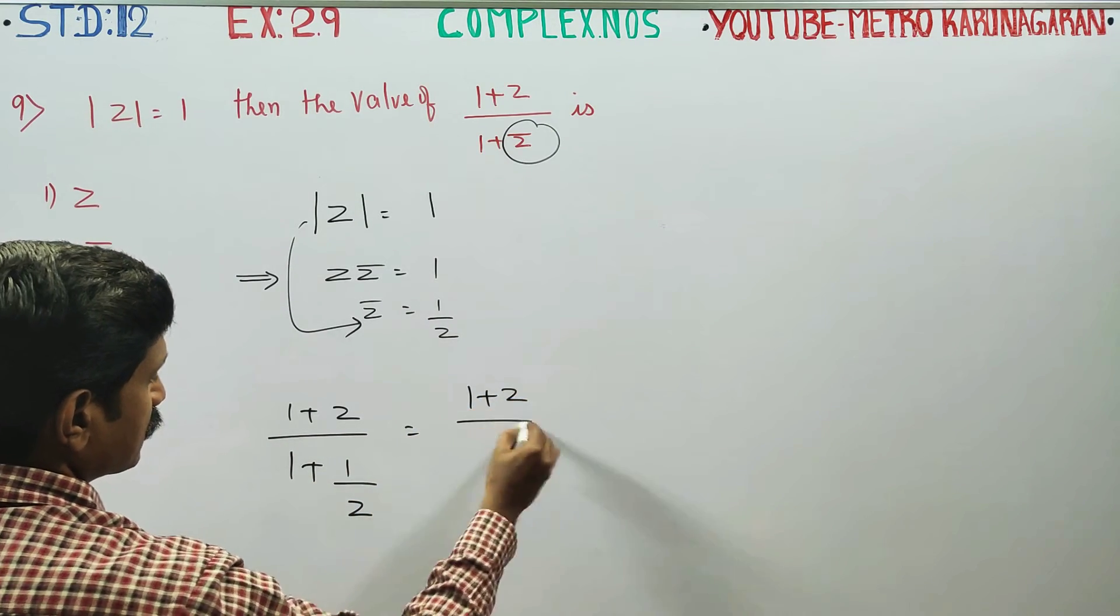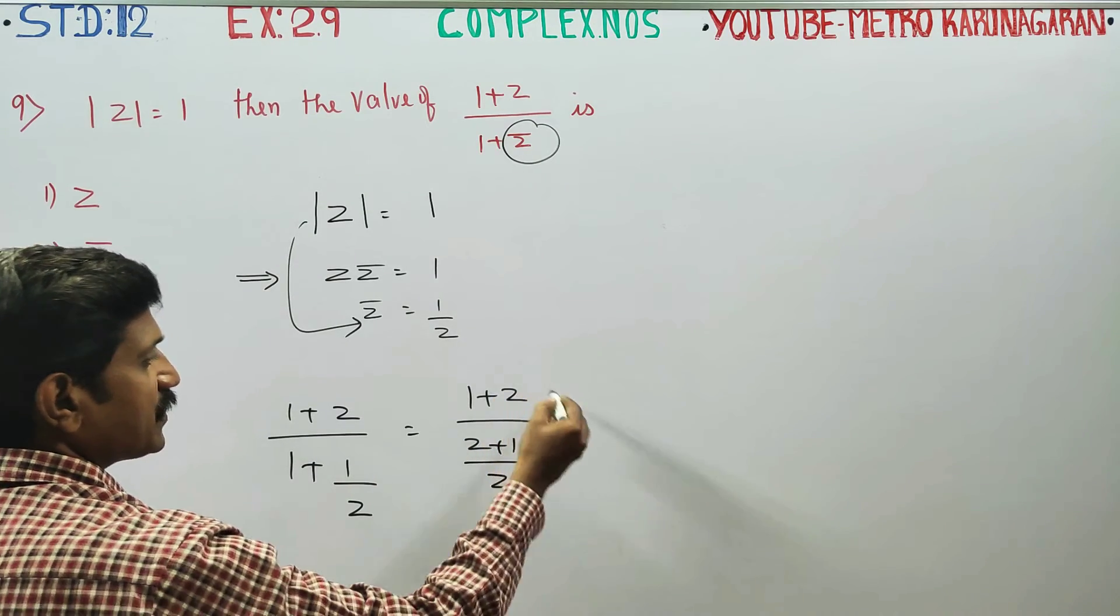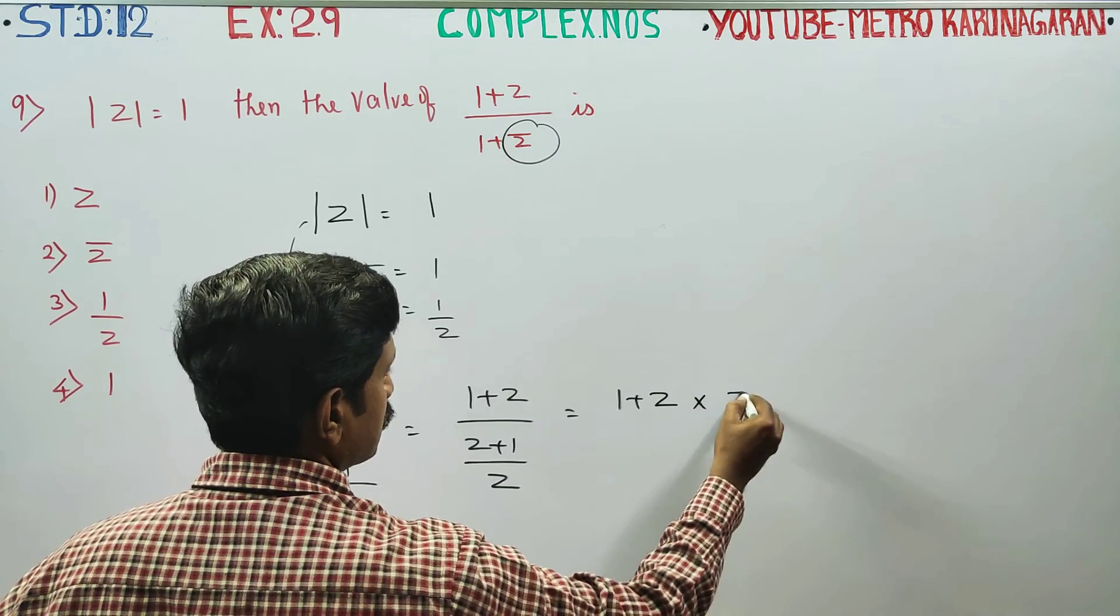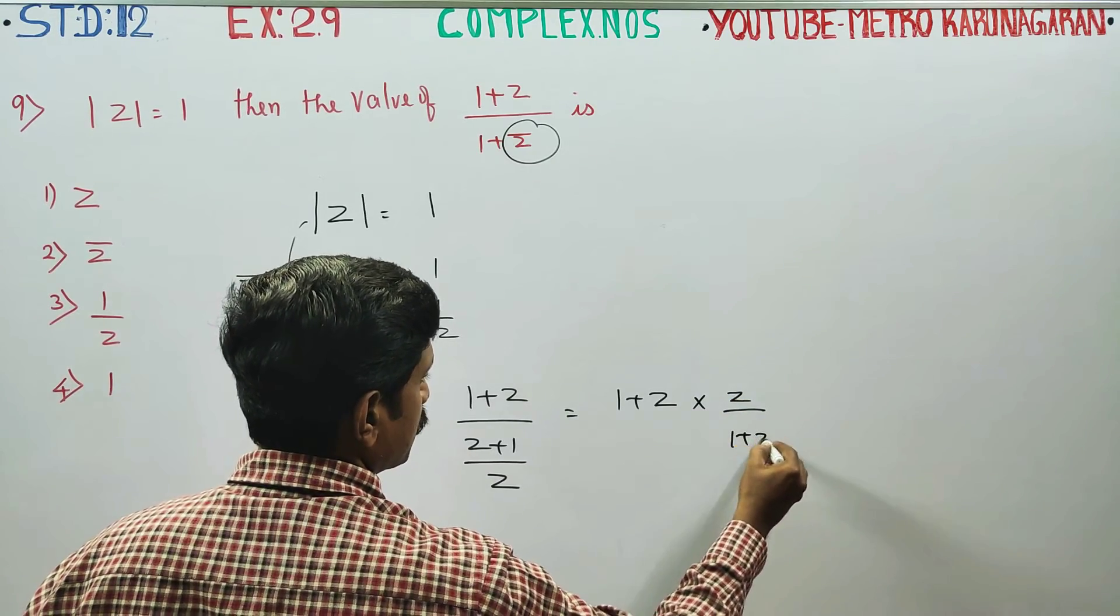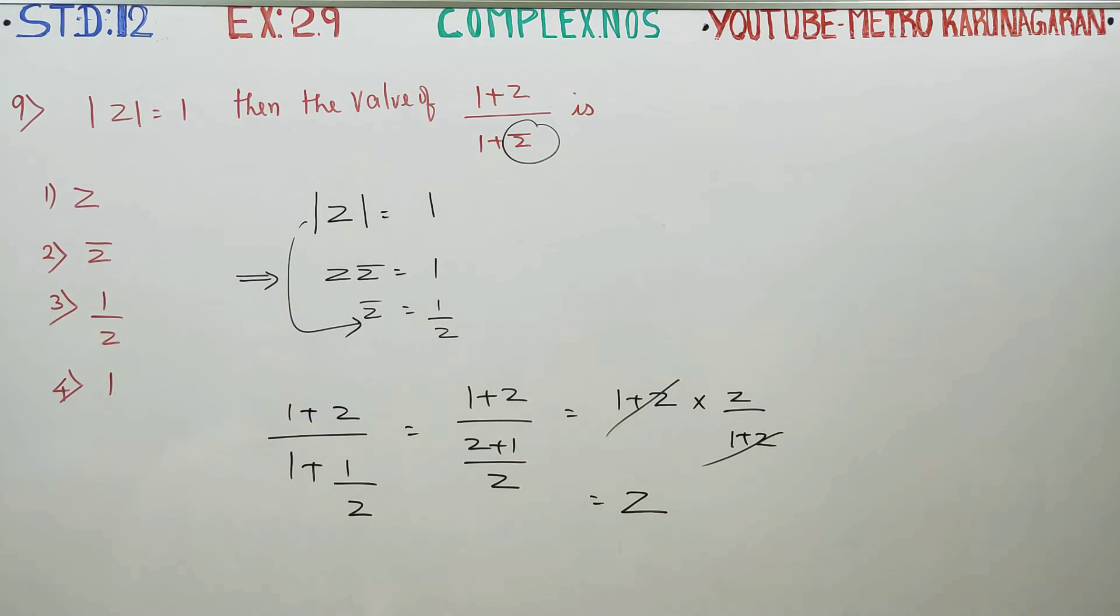1 plus z cross metal is equal to 1 by z, 1 plus Z into Z by again 1 plus Z. You can cancel. Your final answer will be Z is your final answer.